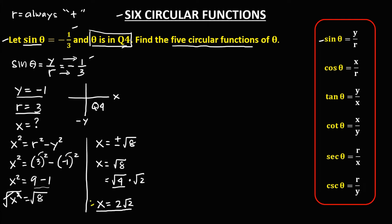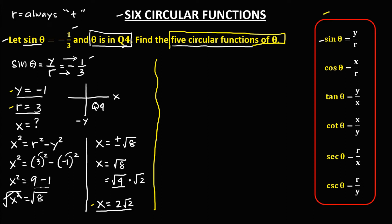Using the formulas to find the remaining five circular functions of theta: cosine theta equals x over r, so x is 2√2 over r which is 3. Therefore, cosine θ = 2√2 / 3.